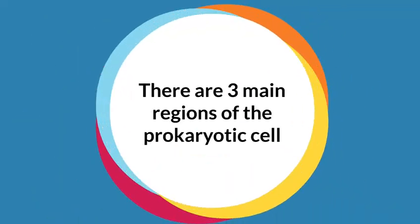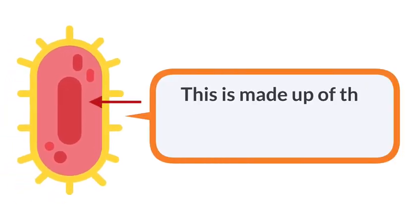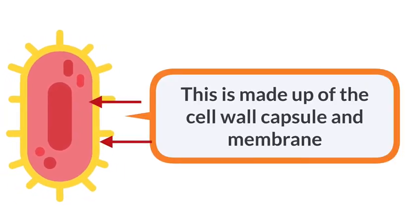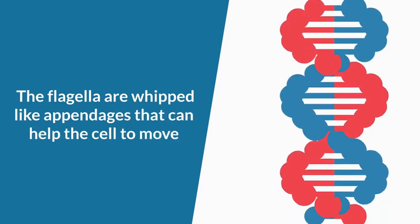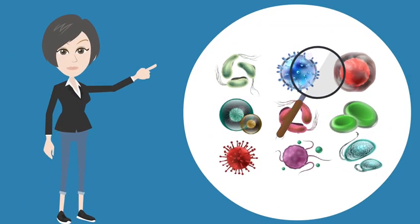There are three main regions of prokaryotic cells. The outside protection or envelope of the cell is made up of the cell wall, capsule, and membrane. The flagella are whip-like appendages that can help the cell to move. Not all prokaryotic cells have flagella.